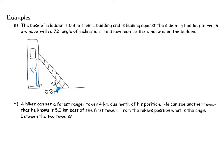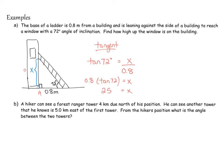From our reference angle we have opposite and adjacent. This side is opposite and this is adjacent, so we're talking about the tangent ratio. We set up: tan 72° = opposite over adjacent = x over 0.8 meters. Solving, tan 72° times 0.8 gives approximately 2.5, rounded to one decimal place. Therefore, the window is 2.5 meters high on the building.